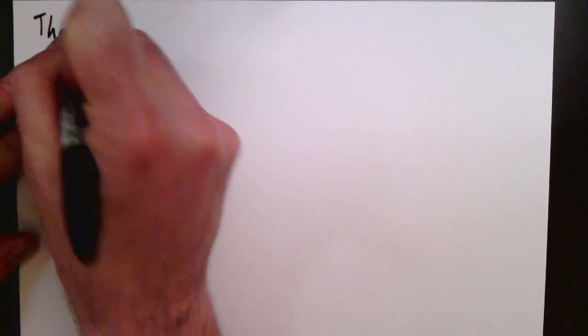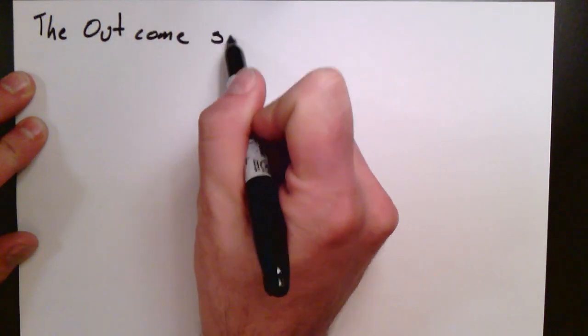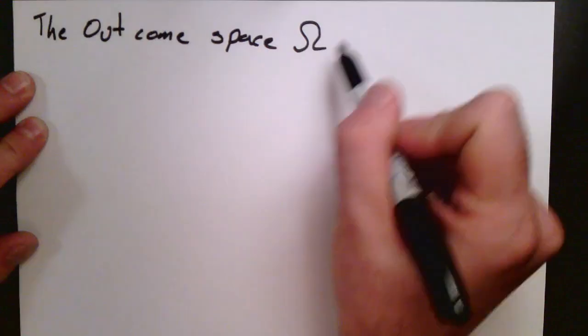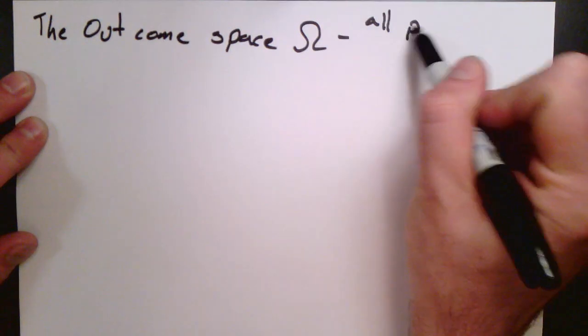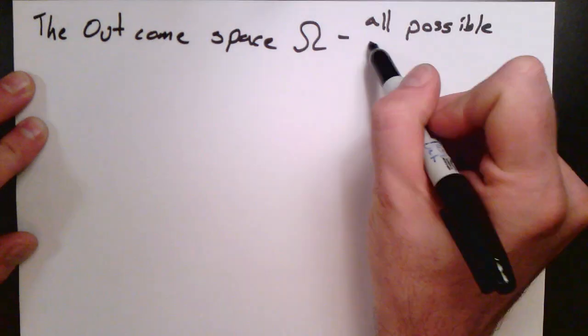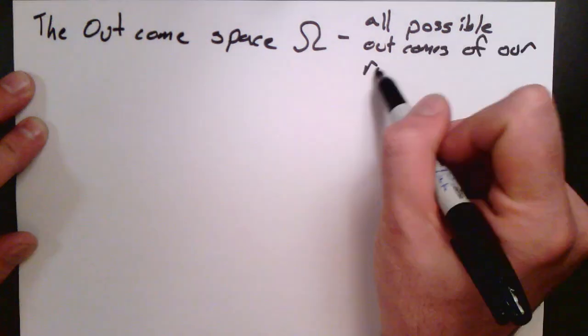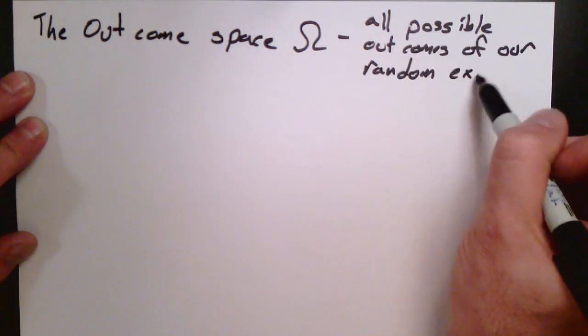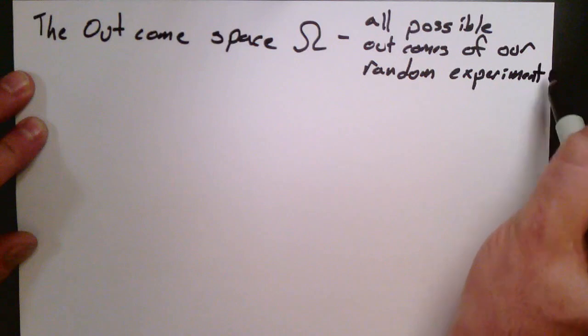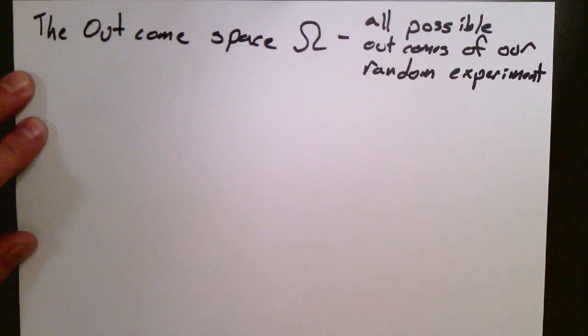The first idea that we're going to set up, the first abstract concept we're going to introduce, is the idea of an outcome space. The outcome space is a set of all possible outcomes of some random experiment. In the examples we've talked about, let's define this by thinking about these few examples we had just a moment ago.